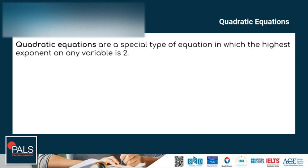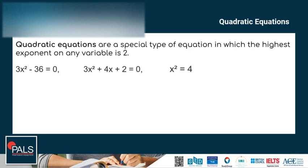Quadratic equations are a special type of equation in which the highest exponent on any variable is 2. For example, 3x squared minus 36 is equal to 0 — the exponent of x is 2. Another example: 3x squared plus 4x plus 2 is equal to 0, and the highest exponent of variable x is also 2.